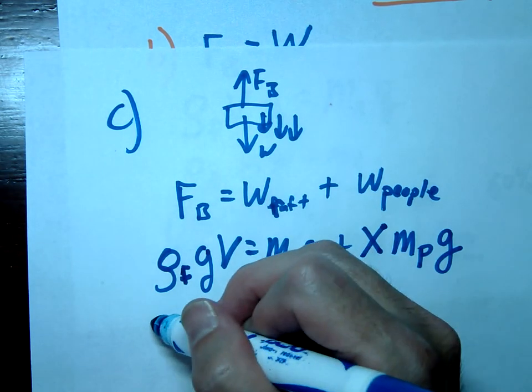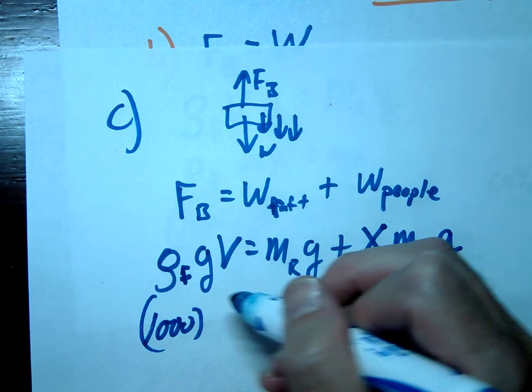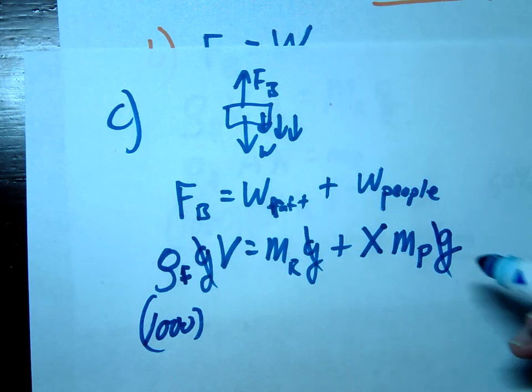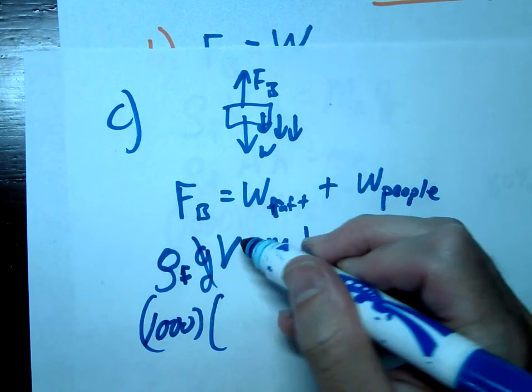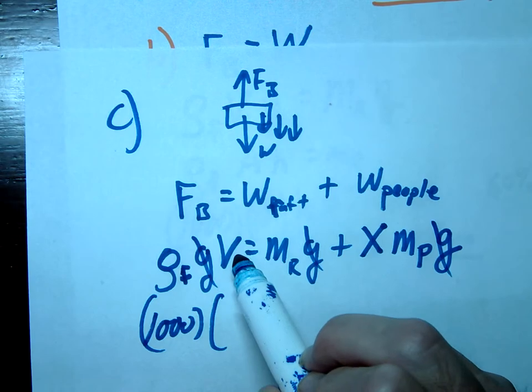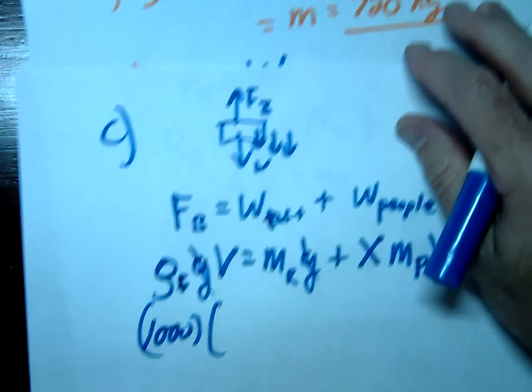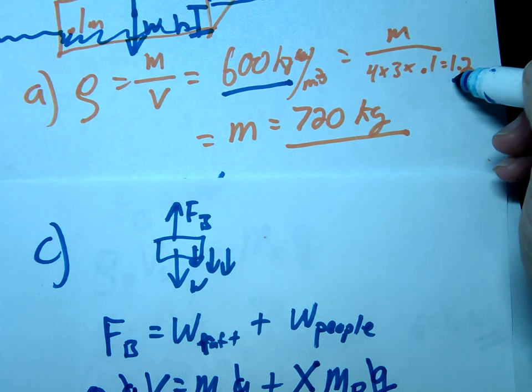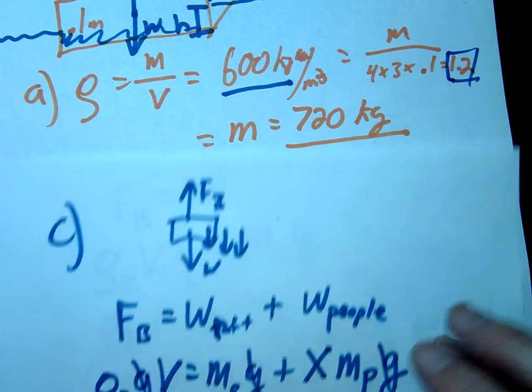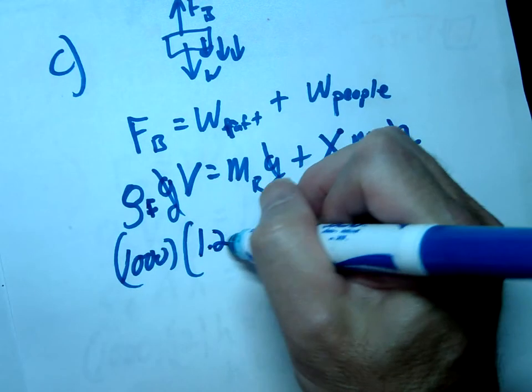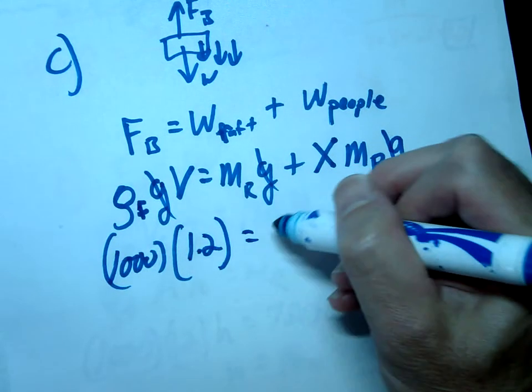We'll just go ahead and solve this. This is gonna be 1000, our g's do cancel here which is nice, and then our volume again this is going to be the fully submerged volume. So back to over here this was our 1.2 when it was fully submerged, that's going to be 1.2.